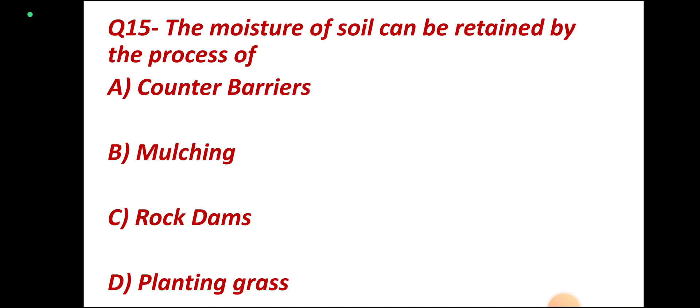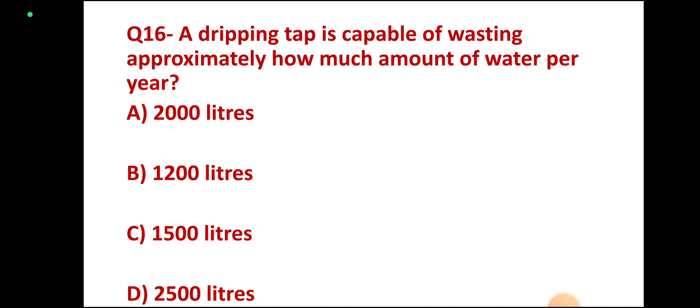Question number 15: The moisture of soil can be retained by the process of counter barriers, mulching, rock dams, or planting grass. Correct answer: mulching.